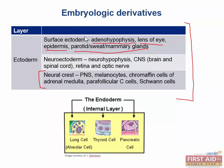The adenohypophysis is derived from Rathke's pouch, and there's a tumor that can arise there called craniopharyngioma. Craniopharyngioma is derived from Rathke's pouch, and sometimes they'll ask — it is derived from surface ectoderm. So craniopharyngioma is derived from surface ectoderm.